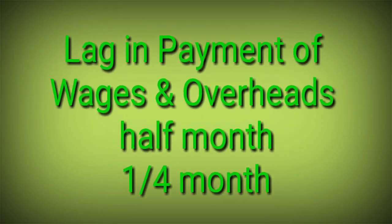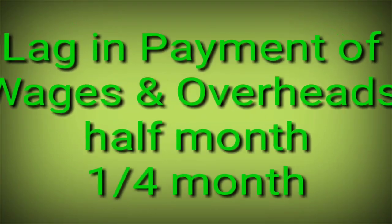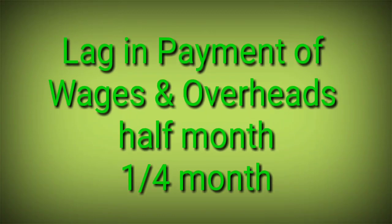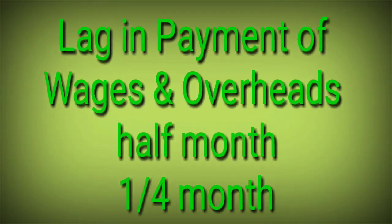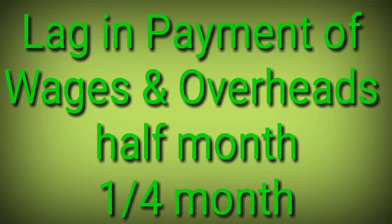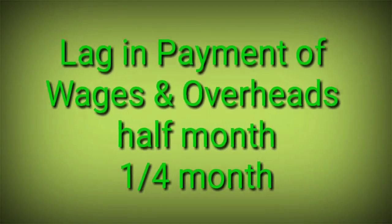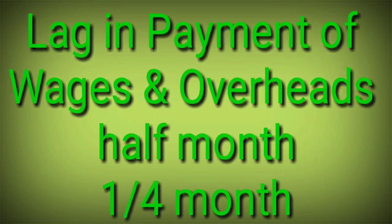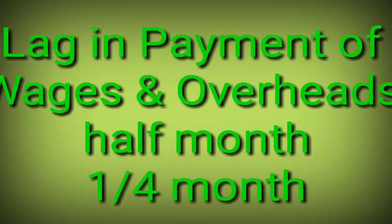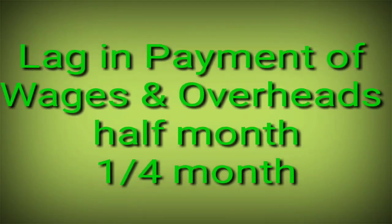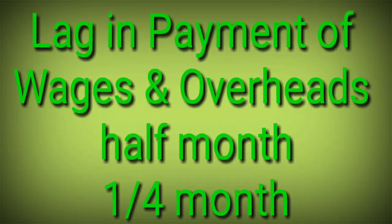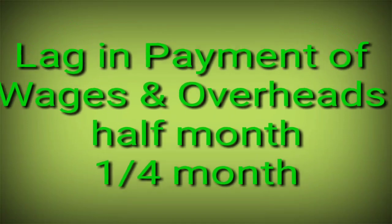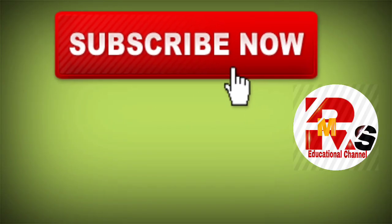An important adjustment seen in every question is the lag in payment of wages and overheads. Lag means outstanding. If the lag in payment of wages and overheads is half a month, then half the amount is written in that month and half in the next. For example, wages of 10,000 in January: write 5,000 in January and 5,000 in February. Similarly, if the lag is one-fourth month, write one-fourth in the next month and three-fourths in the current month.